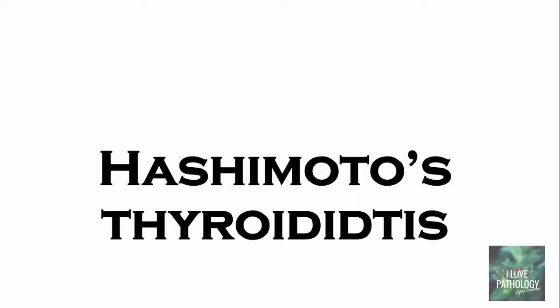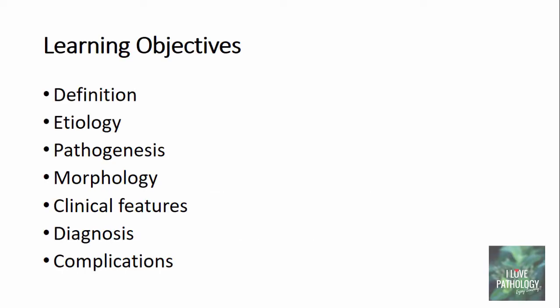Hello everyone, welcome to the short tutorial from Pathology Made Simple at ILO Pathology. Today's topic is Hashimoto's Thyroiditis. The learning objectives for today's topic will be: we will define what Hashimoto's Thyroiditis is, we will understand the etiology and pathogenesis of it, and then we will describe the morphology along with clinical features. We will understand how to diagnose Hashimoto's Thyroiditis and then we will end with knowing the various complications of Hashimoto's Thyroiditis.